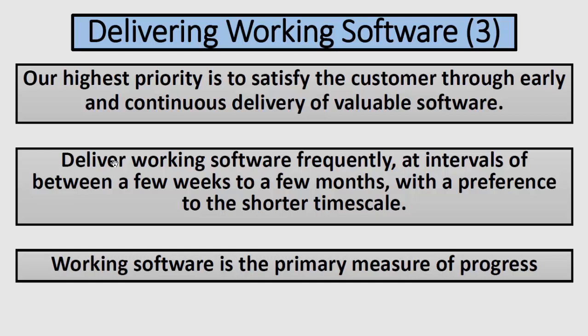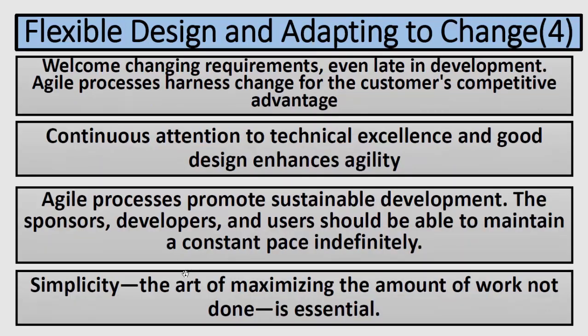The second principle: deliver working software frequently at intervals of between a few weeks to a few months, with a preference to the shorter timescales. We will deliver software at intervals called sprints or iterations — for example, every two weeks showing the customer a progress in working functionality. The third principle: working software is the primary measure of progress, as stated in the four values — working software is more important than comprehensive documentation.